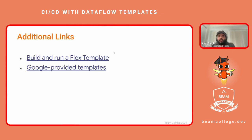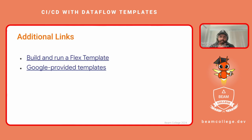On the next slide, I've included links on how to run flex templates — this sends you to the GCP documentation page which walks you through how to build a Docker image to deploy a flex template. I've also included a link to Google-provided templates, which lets you do a lot of common patterns out of the box, even without writing a single line of code.